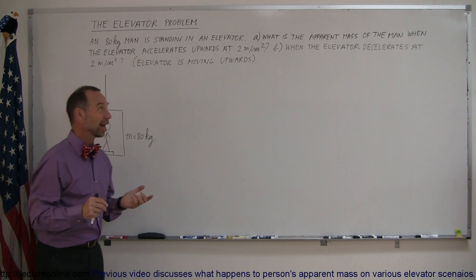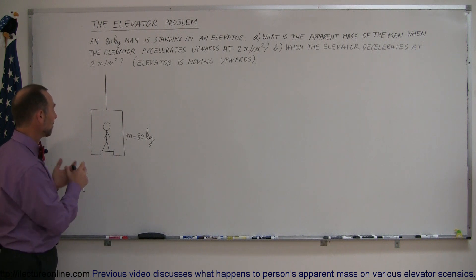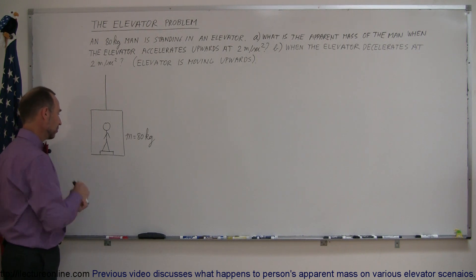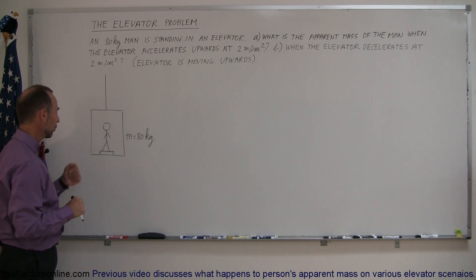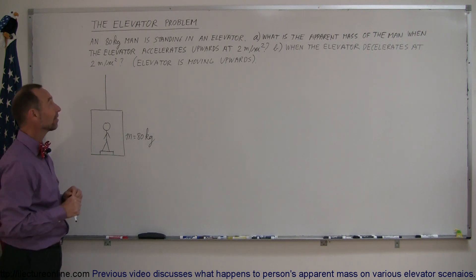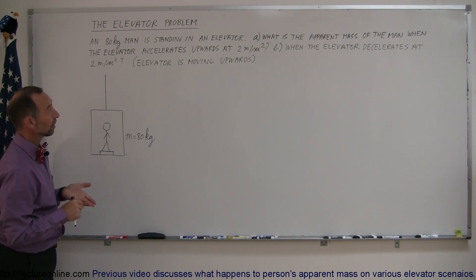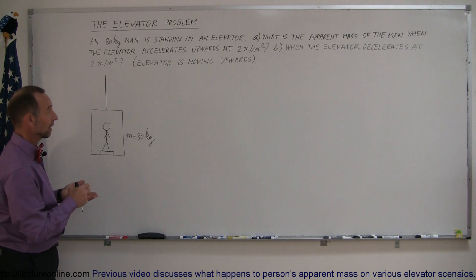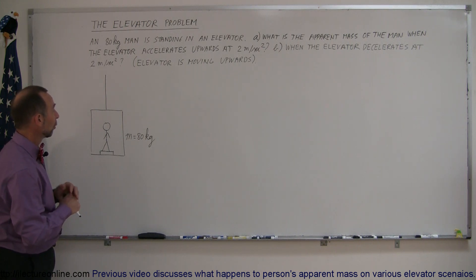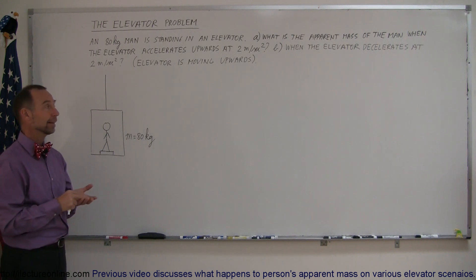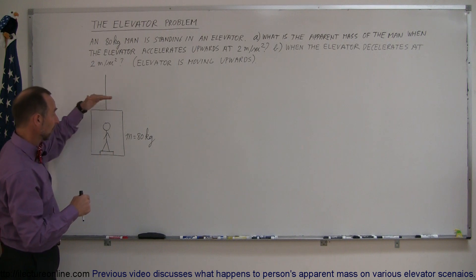Welcome to iLectureOnline. Here's an example of how you work out an elevator problem. We have an 80 kilogram man standing in an elevator, and to keep track of his apparent weight or apparent mass, he stands on a bathroom scale. The elevator is accelerating upward at 2 meters per second squared — what is the apparent mass of the man? And when the elevator decelerates at 2 meters per second squared, what is the apparent mass? In each case the elevator is in upward motion, starting from the bottom floor moving upward.